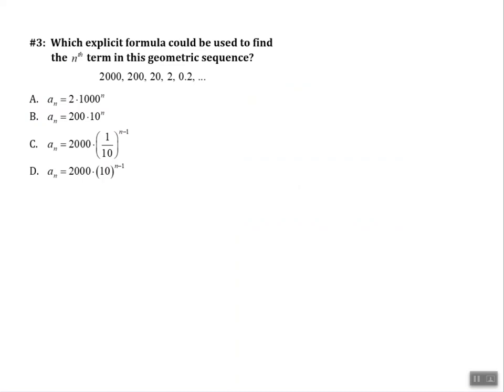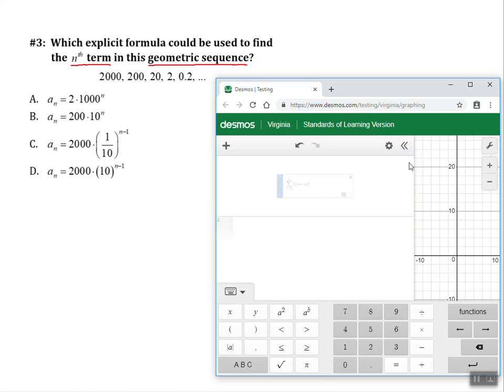Let's look at our final example. It says which explicit formula could be used to find the nth term in this geometric sequence. So and then it gives me five of the terms. So I've got all these answer choices. What I'm going to show you is how to type each of these answer choices into the Desmos calculator and use a slider to see which one actually is the correct one. So pull up our Desmos calculator. I'm going to clear this out.